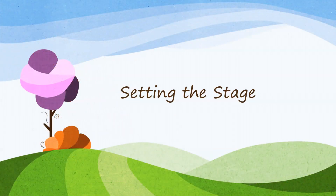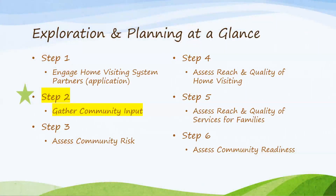First, let's go over where this step of the assessment fits within the Exploration and Planning process. As a reminder, here are the six steps of the Exploration and Planning process. The process begins with engaging home visiting system partners, including and especially families. Having completed that step, you are now beginning Step 2, Gathering Community Input.